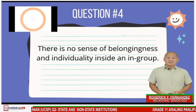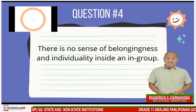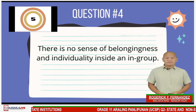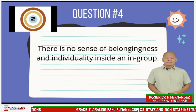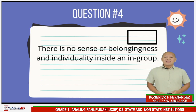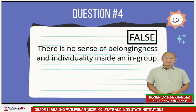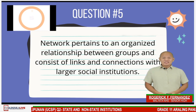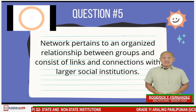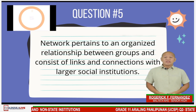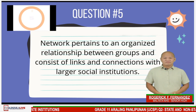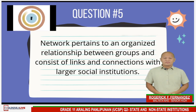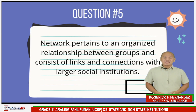Question number four: There is no sense of belongingness and individuality inside an in-group. The answer is FALSE. Last question, question number five: Network pertains to an organized relationship between groups and consists of links and connections with larger social institutions. The answer is TRUE.